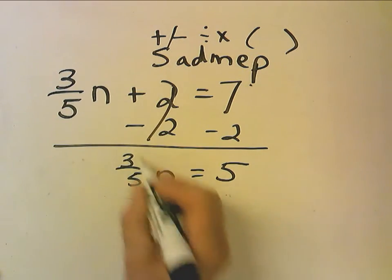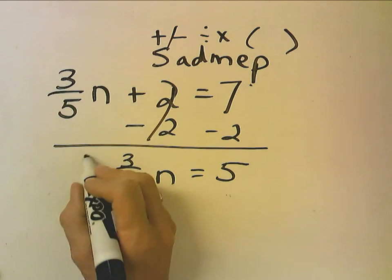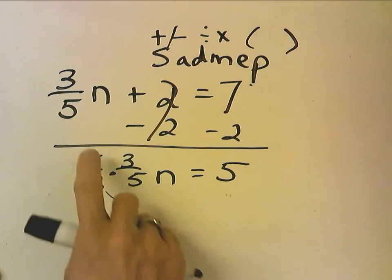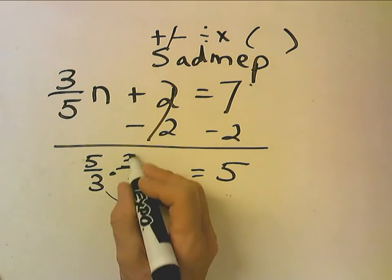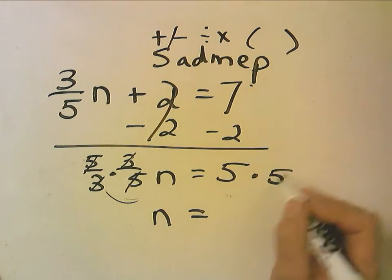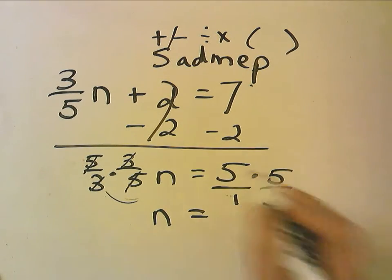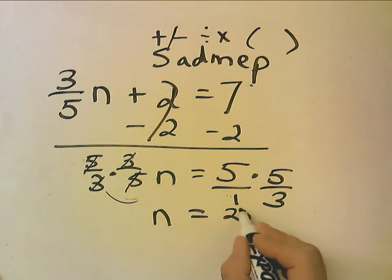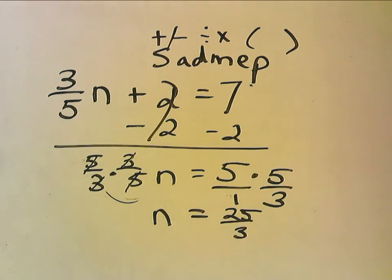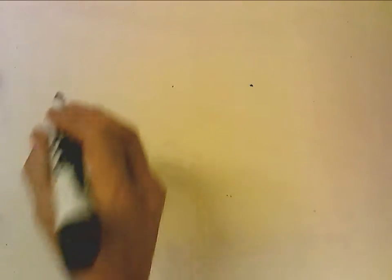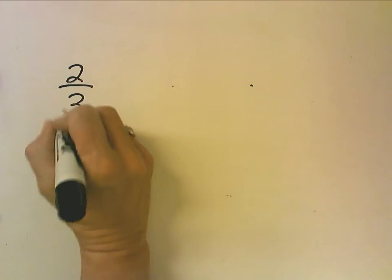So I get 3 fifths n equals 5. Now to get rid of 3 fifths and turn that into 1, I multiply it by its inverse. So 5 thirds times 3 fifths, this cancels out, I'm left with n. If I multiply the left by 5 thirds, I have to multiply the right by 5 thirds. I multiply across the top and across the bottom. You can leave your answer as 25 thirds. So now go ahead and stop the tape, try to do the next one on your own.